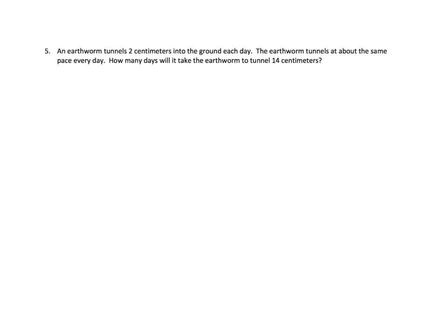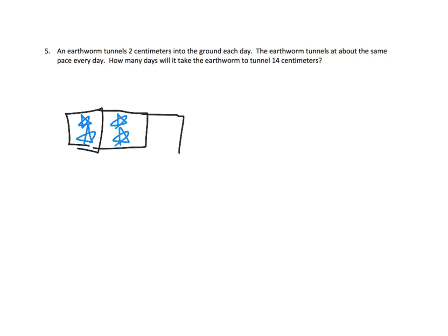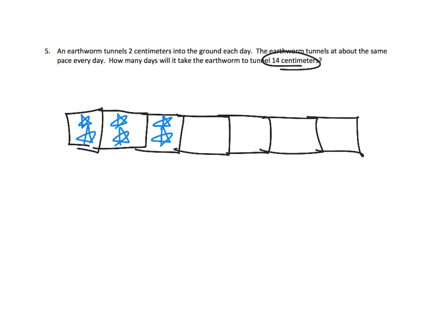Now it says: an earthworm tunnels 2 centimeters into the ground each day. The earthworm tunnels at about the same pace every day. How many days will it take for the earthworm to tunnel 14 centimeters? So basically, here's one day and that's 2 centimeters. I'm going to use stars — there's 2 centimeters. Here's another day, that's another 2 centimeters. Here's another day, and that's another 2 centimeters. So let's just keep going and see how many of these days I'll need in order to finally reach 14 centimeters.